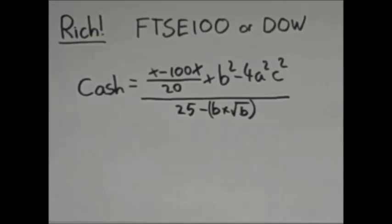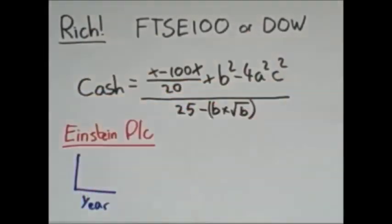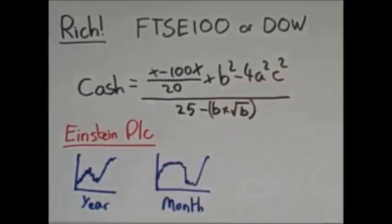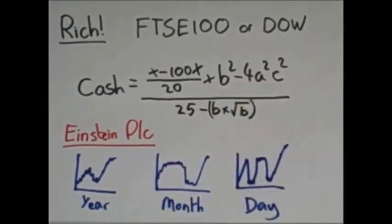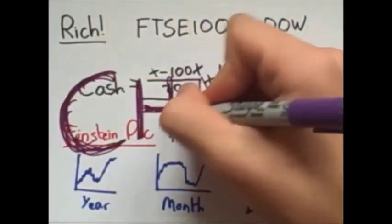Here is the company, Einstein PLC. And here is their share price over the last year, and here is the share price over the last month, and here is today's share price. They look kind of similar. But looking at the share price is one thing, forecasting is another. It seems totally random, and this randomness associated with fractals is called chaos.